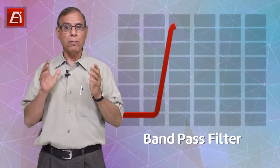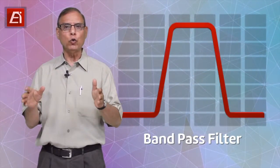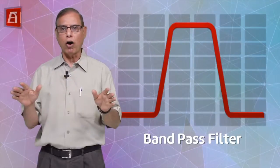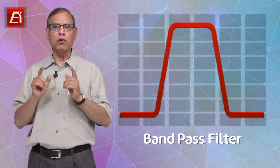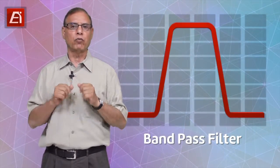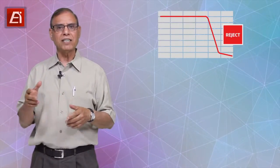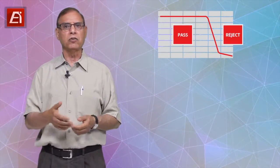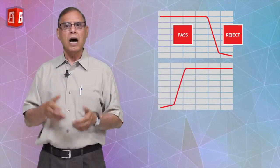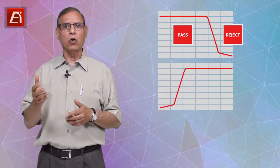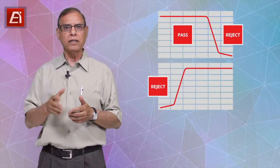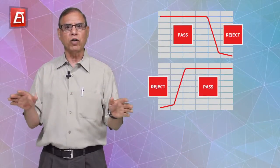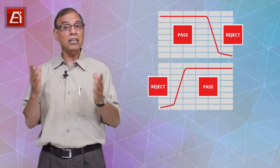The next type, band pass filters, are the most widely used by far because the function they perform is needed very frequently. Remember that low pass filters reject signals higher than their cutoff frequencies and pass signals below them, while high pass filters reject signals lower than their cutoff point and pass all frequencies above it.